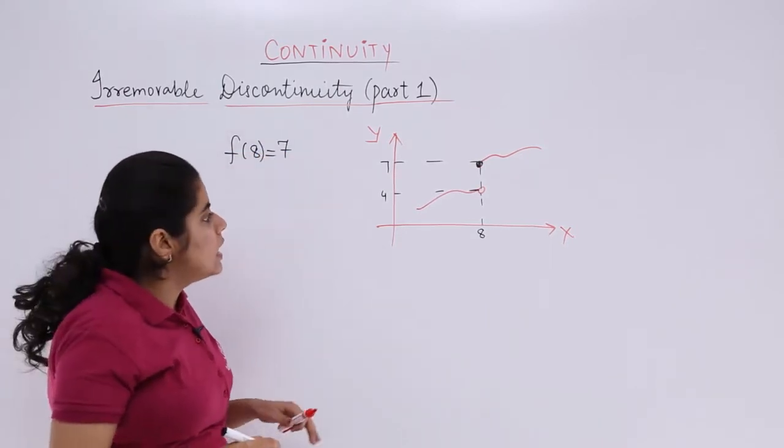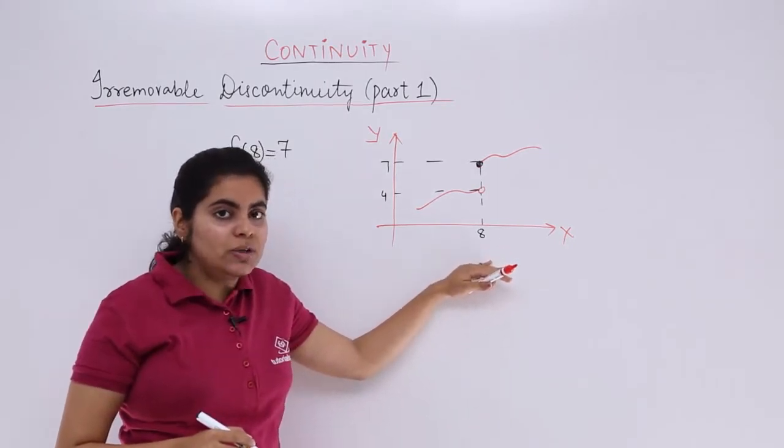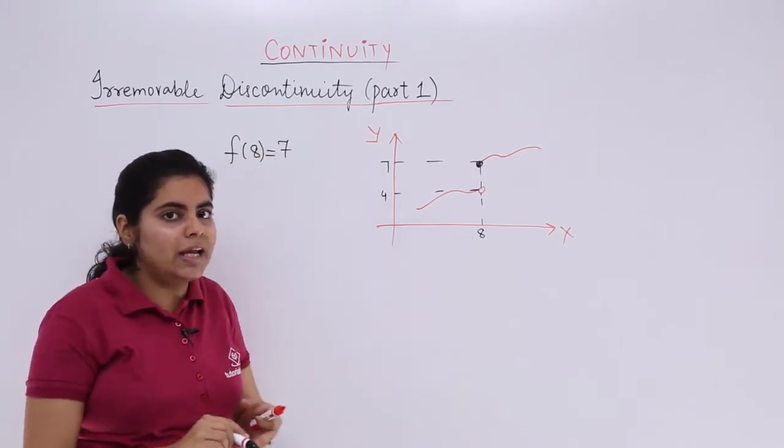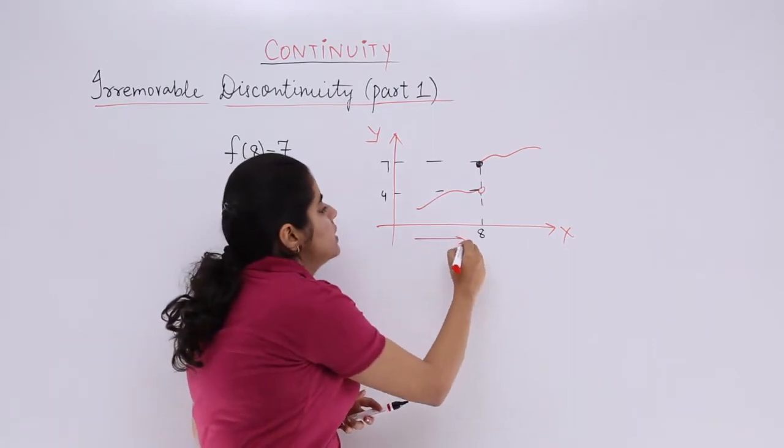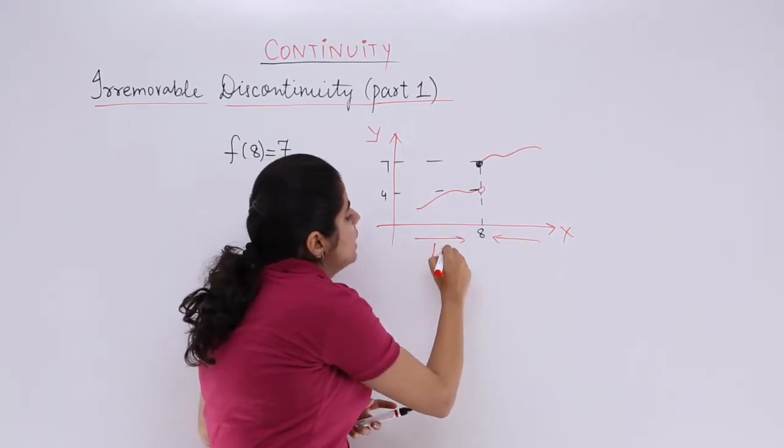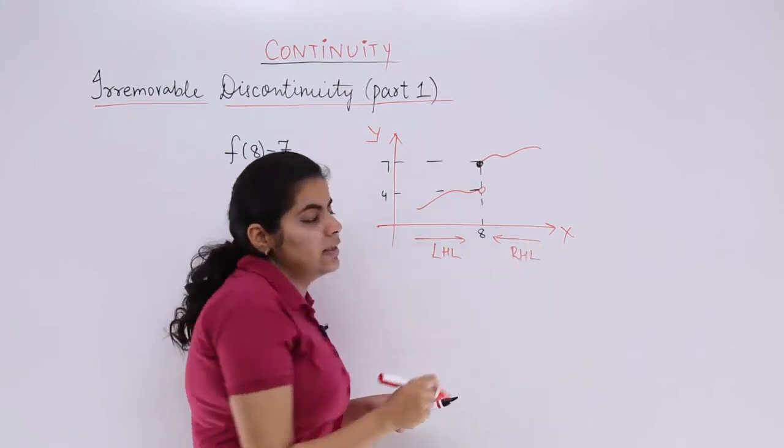Next is what? Next you are interested in actually approaching it. Approaching 8 means either from the left-hand side or from the right-hand side. This is called as left-hand limit. This is called as right-hand limit.